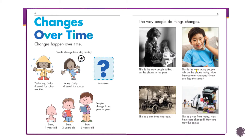Last week we talked about putting a single day on a timeline — a school schedule — and what a person did throughout their day. Today we're going to talk about a couple of different things. Look at your magazine at the pictures of Emily.